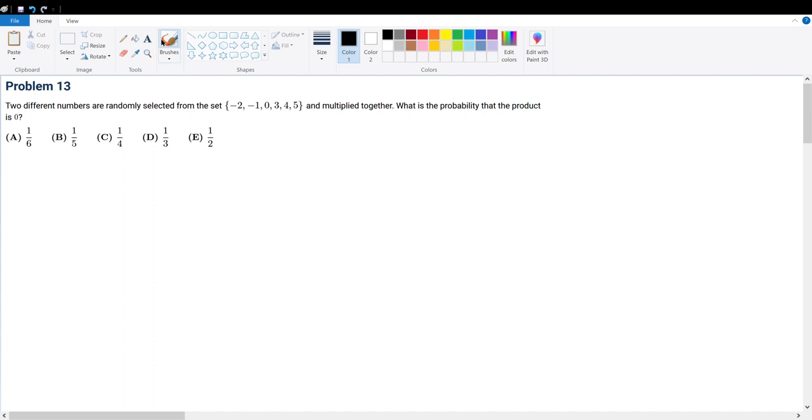Problem 13. Two different numbers are randomly selected from the set and multiplied together. What is the probability that the product is 0?